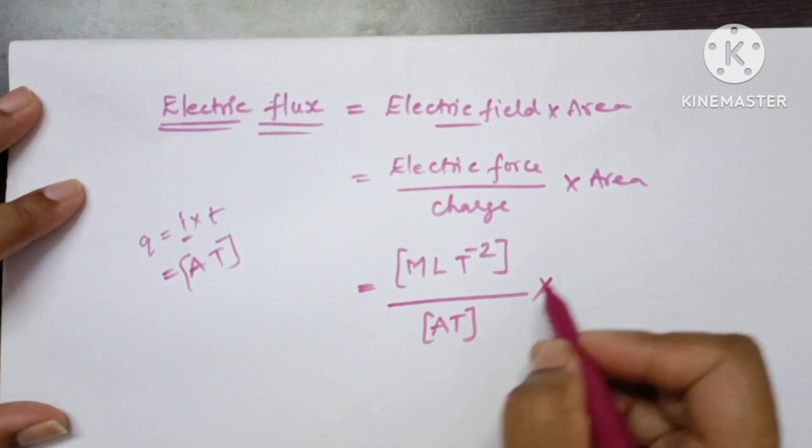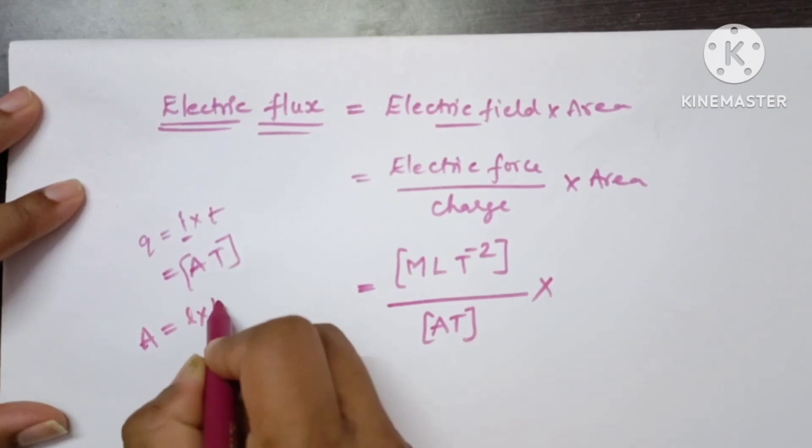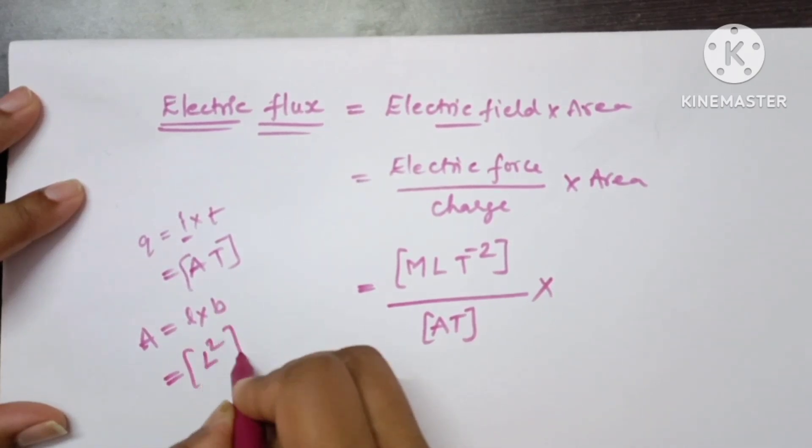Next, write the dimensions of area. Area equals length multiplied by breadth, which is expressed dimensionally as L^2.